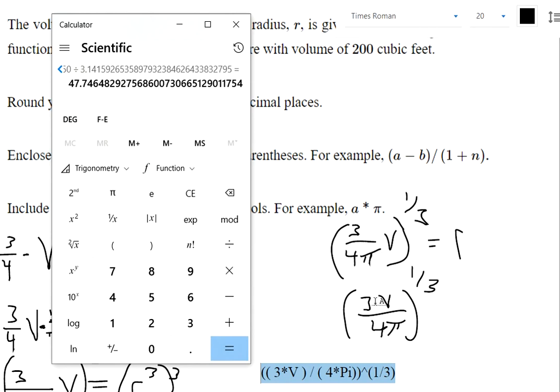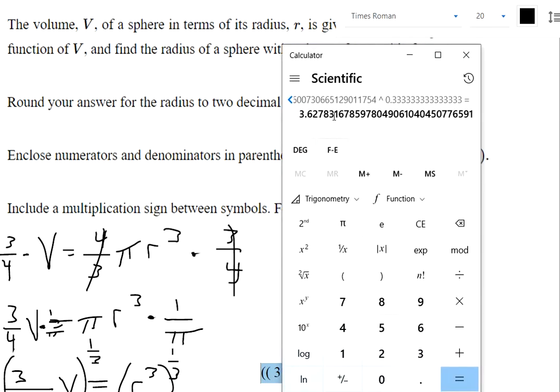So I did 3 times 200, divide 4, enter, divide pi, enter. And now this whole thing needs to be raised to the 1 3rd power. So I'm going to hit this key to get my exponent. And then my exponent is 1 3rd. So if we need to round to two decimal places, my answer is 3.63.